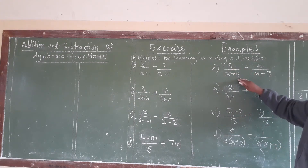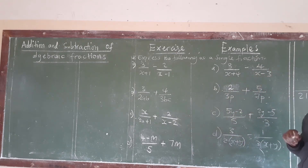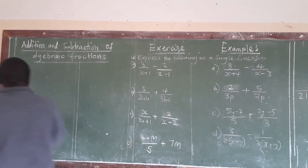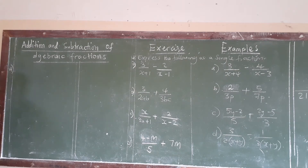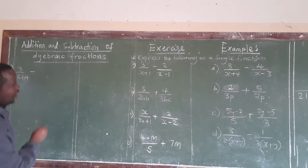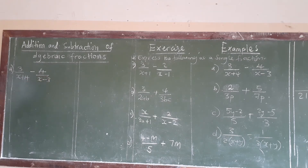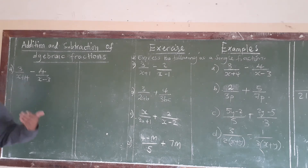The first one is: we have 3 over x plus 4, minus 4 over x minus 3. So we are able to see that there are two fractions. The question demands that we combine these to form one by subtracting. When we are dealing with the addition and subtraction of algebraic fractions, the most important thing is to get the lowest common denominator.